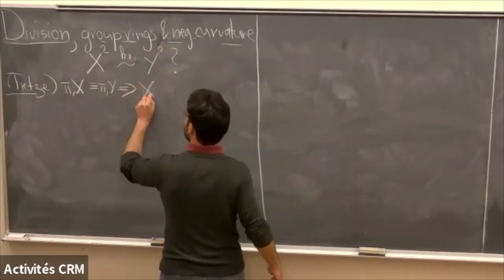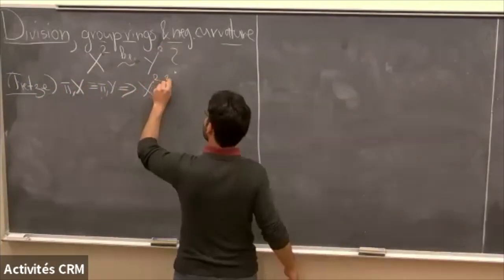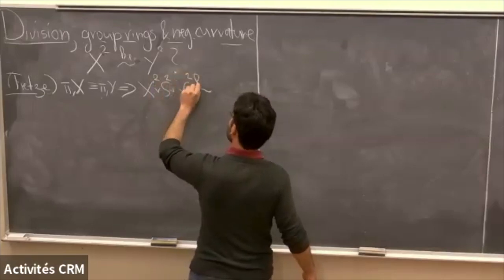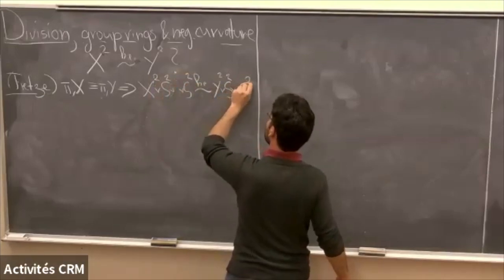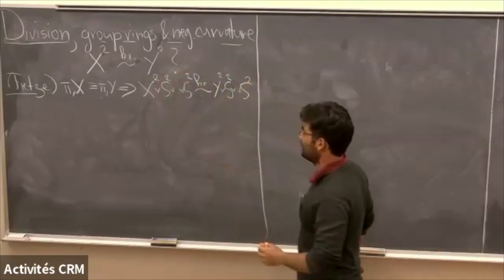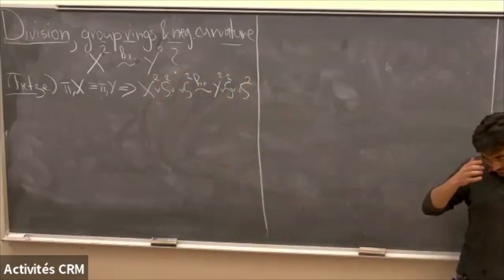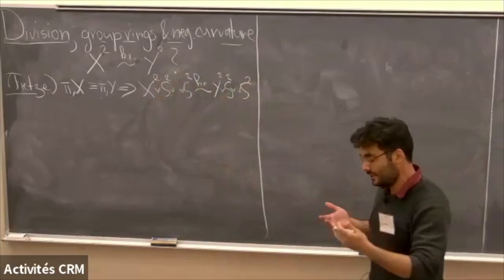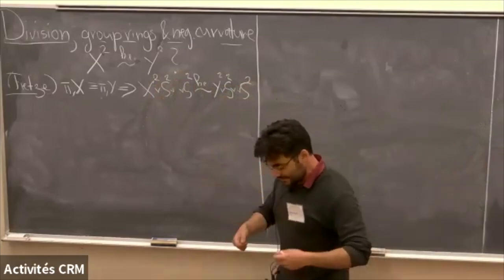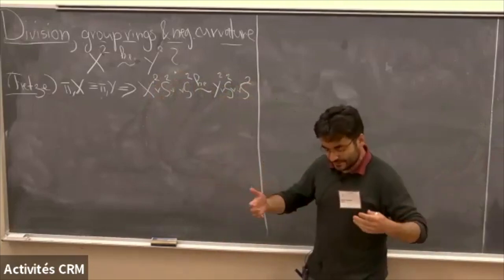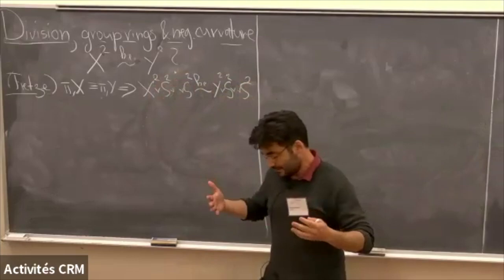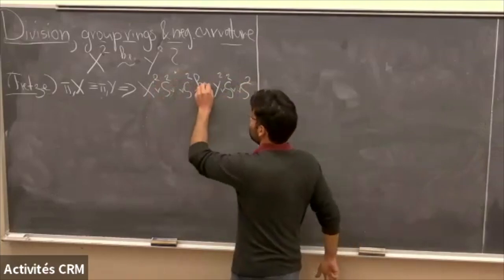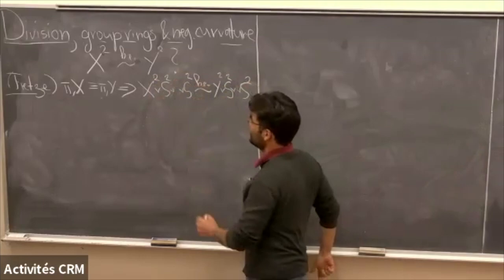So X wedge with some two-spheres and Y wedge with some two-spheres become homotopy equivalent. This is a topological way to state that if you take two presentations for the same group, then you can do Whitehead moves and add trivial relators in order to get from one presentation to another.